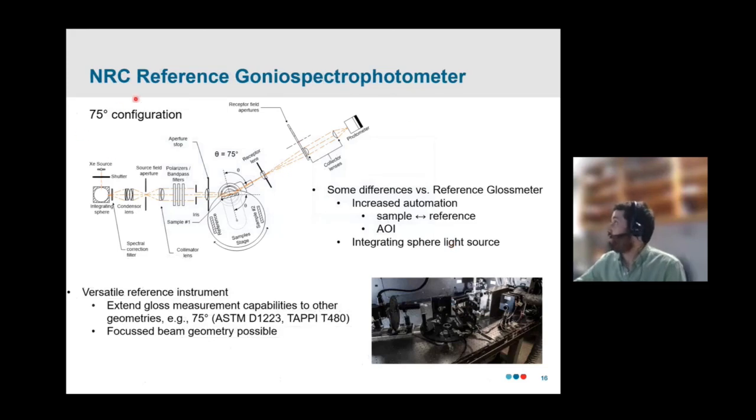So at this point, I'll move on to describing our reference goniospectrophotometer. So this is another instrument that we have at NRC. It's more recent. It was constructed in 2005 and it can measure specular gloss in the geometries, the same geometries as the reference gloss meter. But it can also satisfy the geometries prescribed in other standards. So it can do, for example, 75 degrees angle of incidence. And it's also capable of realizing a focused beam geometry, which is called for in certain standards. I think this TAPI standard, for example, requires that.